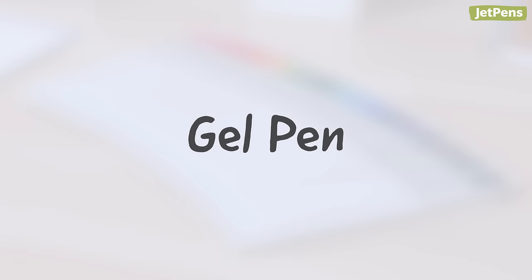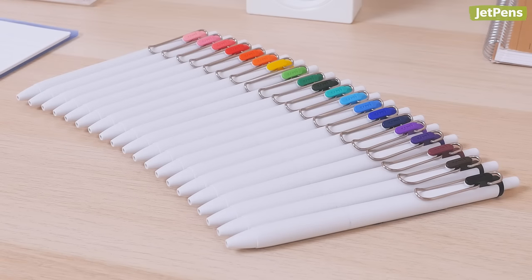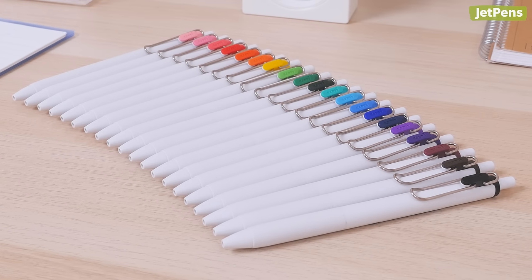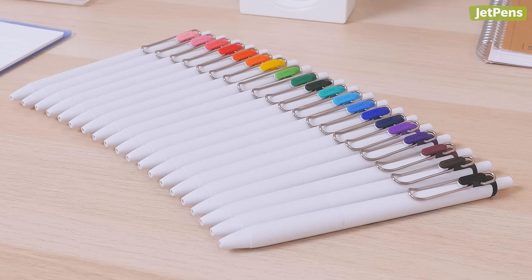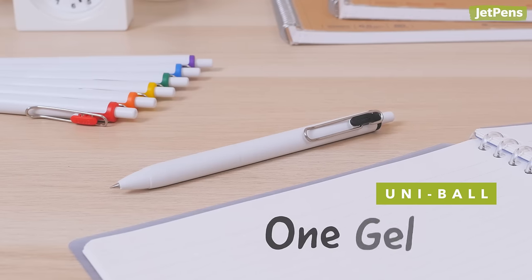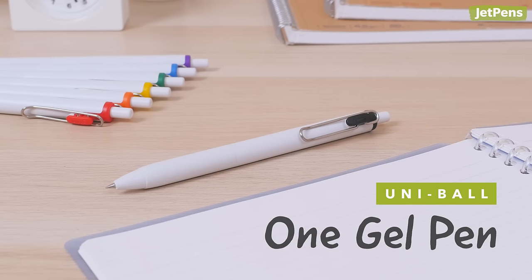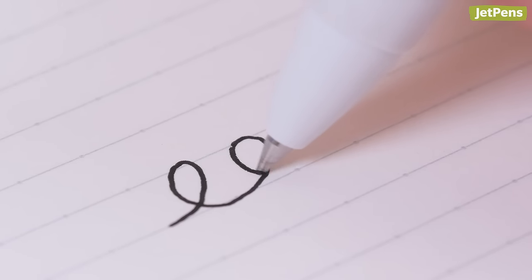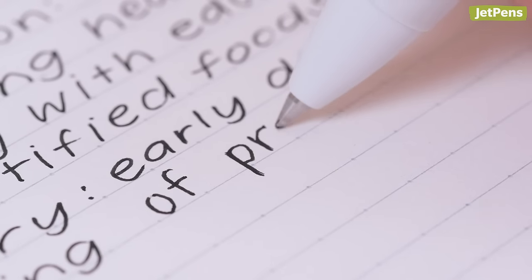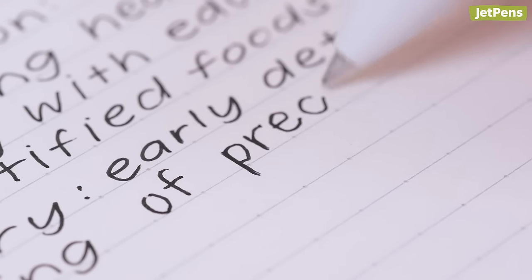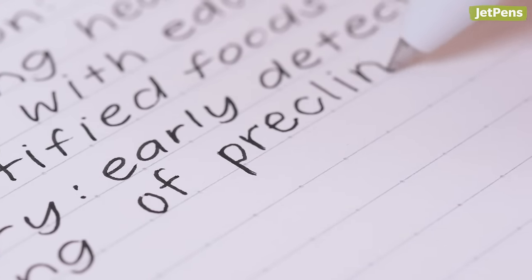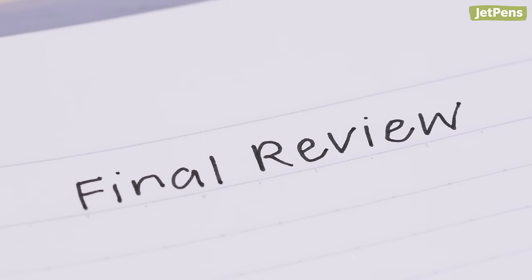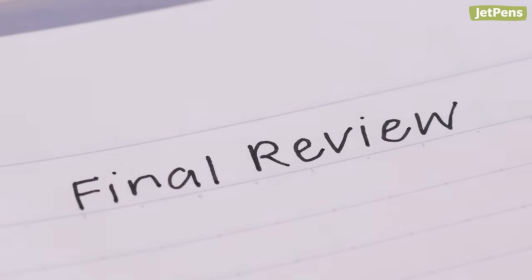Gel pens come in a wide variety of colors, making them a great option for color-coding enthusiasts. The Uniball One in particular uses a specially formulated ink with pigment particles that stay on the surface of your paper. Inks stand out more on the page, so it's easier to recall notes after studying. The ink dries quickly and resists bleeding, so your notes will always be crisp.